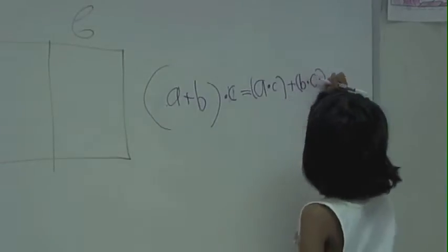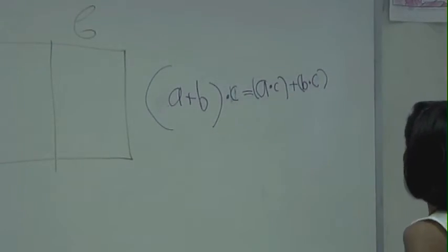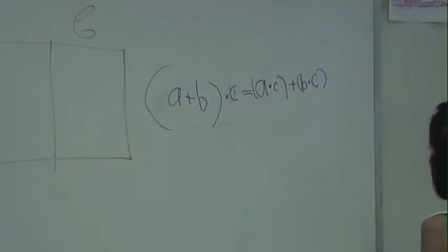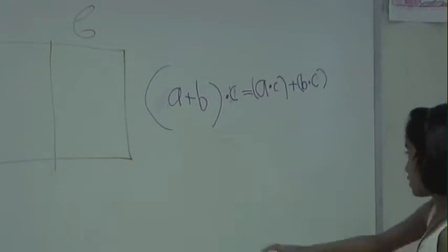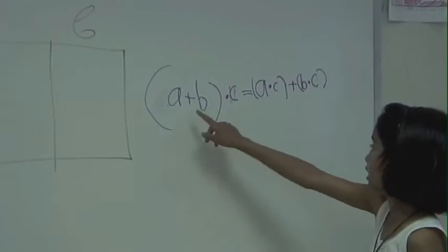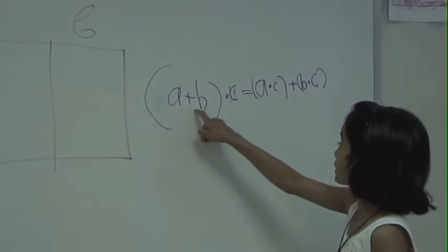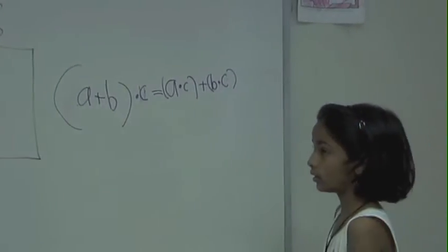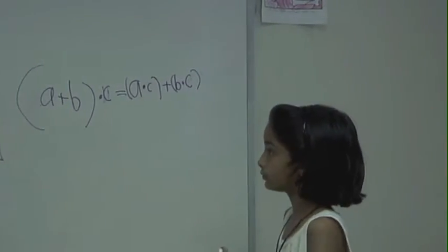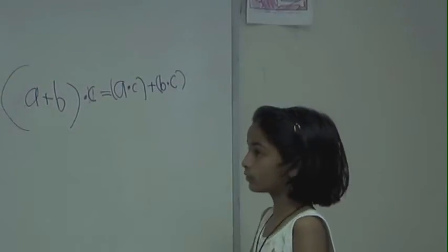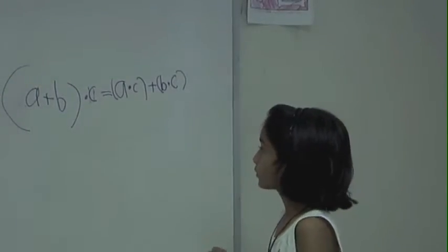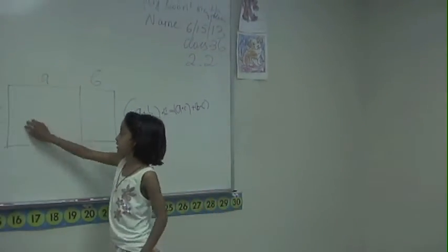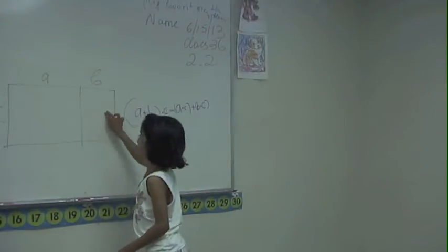Why can you do this? Explain it to me, please. Because A multiplied by C — well, because it's basically the same as this. It's just that over here you're adding. There it's the same, but versus area. You just explained that this is the area of the big rectangle. Why did you take A multiplied by C, then B multiplied by C? Because A multiplied by C is one rectangle and B multiplied by C is another rectangle. Fantastic. You did a wonderful job.